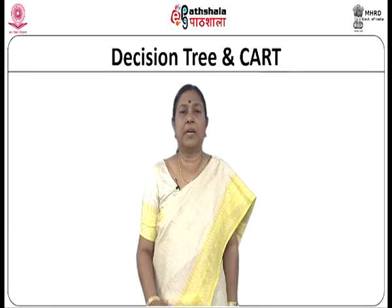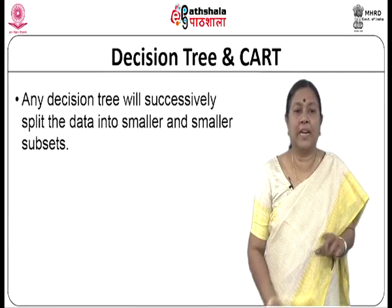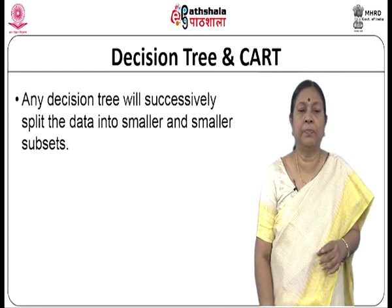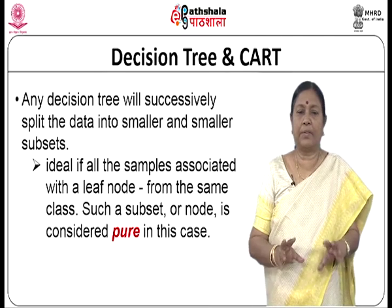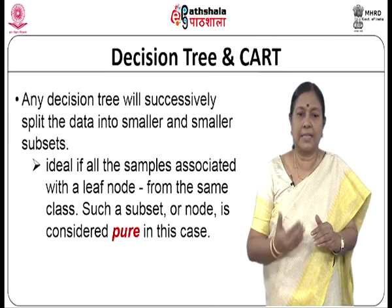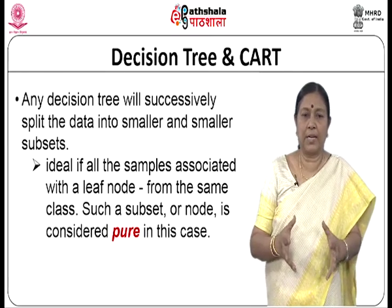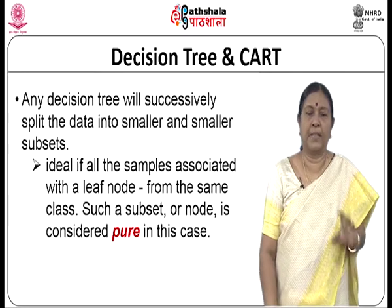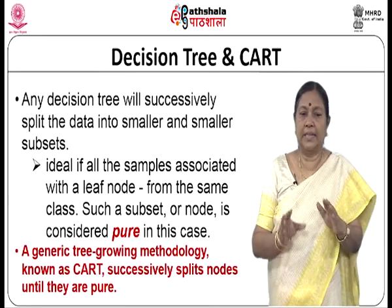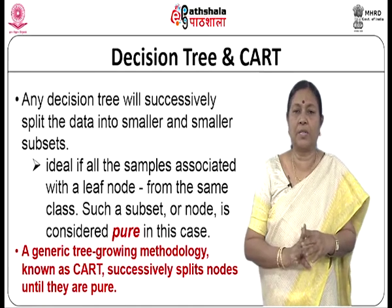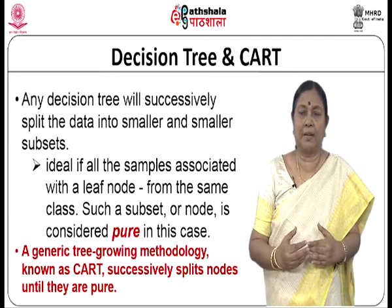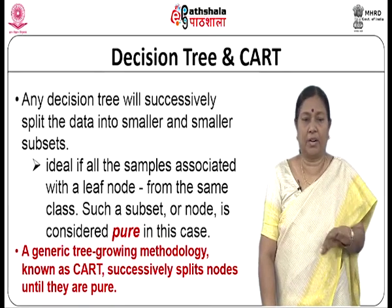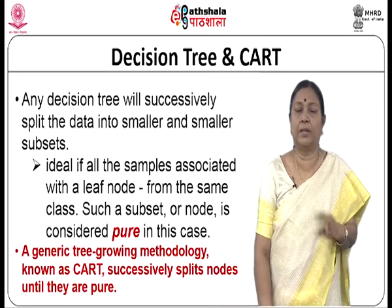Let us look at the relation between decision tree and CART. Any decision tree successfully splits the data into smaller and smaller subsets. It will be ideal if all the samples associated with the leaf node come from the same class — such a subset or node is considered pure. A generic tree-growing methodology known as CART successfully splits nodes until they are pure, splitting nodes again and again until you reach the pure subset.